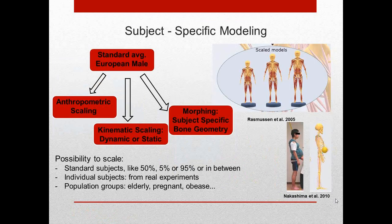By default the full body model represents a standard average European male, but it's easy to adjust the subject to your needs. You can use anthropometric scaling by entering height, weight, and segment lengths of thigh, shank, and foot. If you have motion capture recording, you can use dynamic or static scaling to recreate your subject. With CT or MRI scans you can create a patient-specific model. You can also model population groups such as different genders, elderly, or more obese persons.